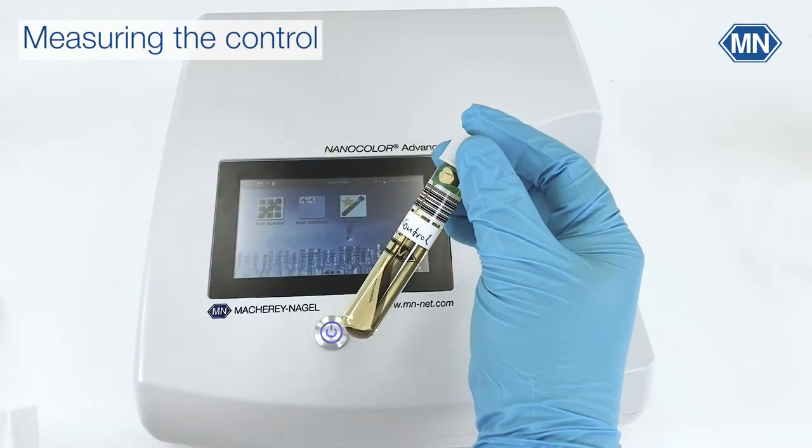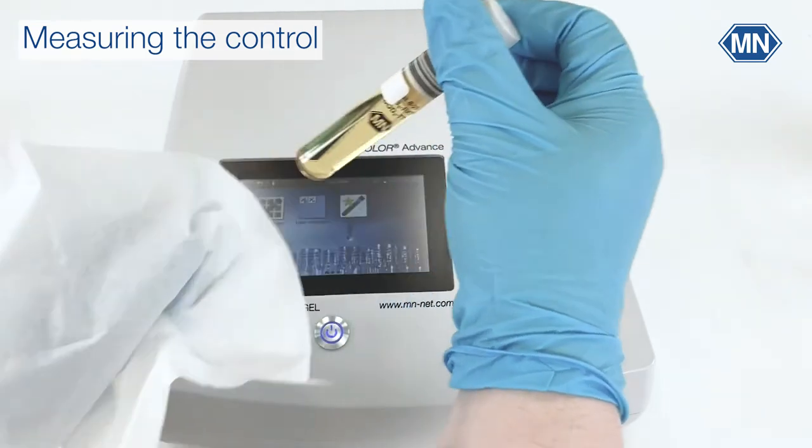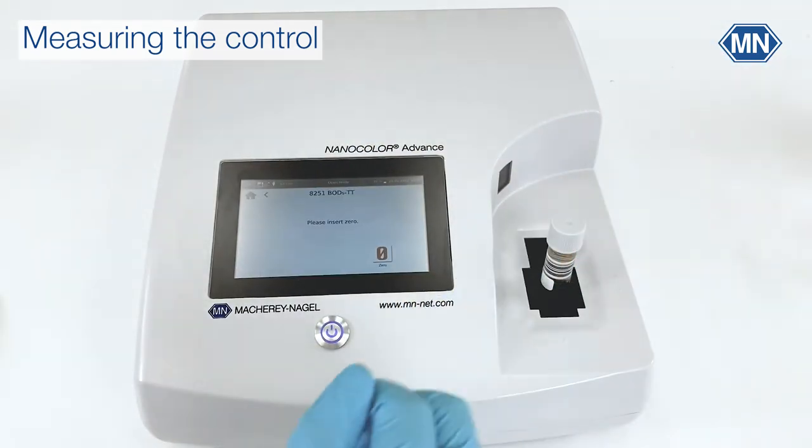Take your control tube and clean it from the outside. Then put it in your photometer and press zero.